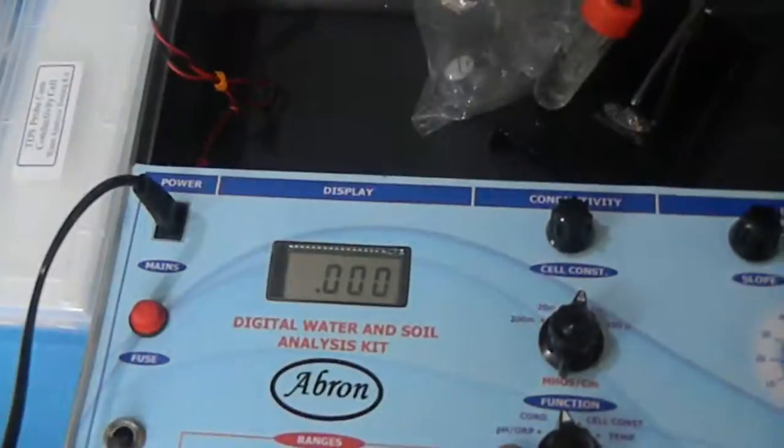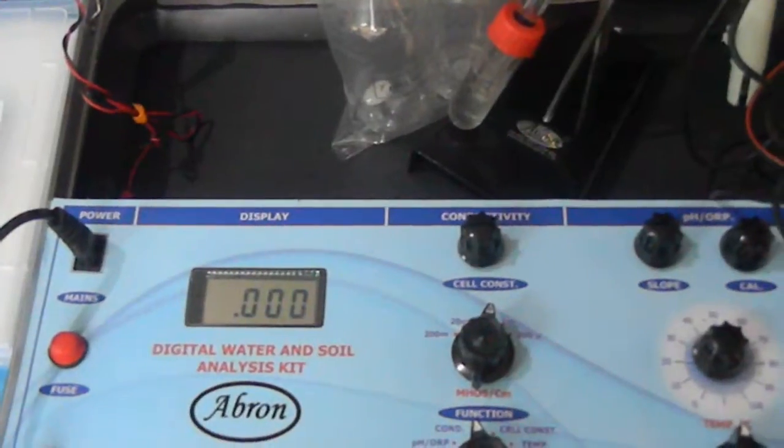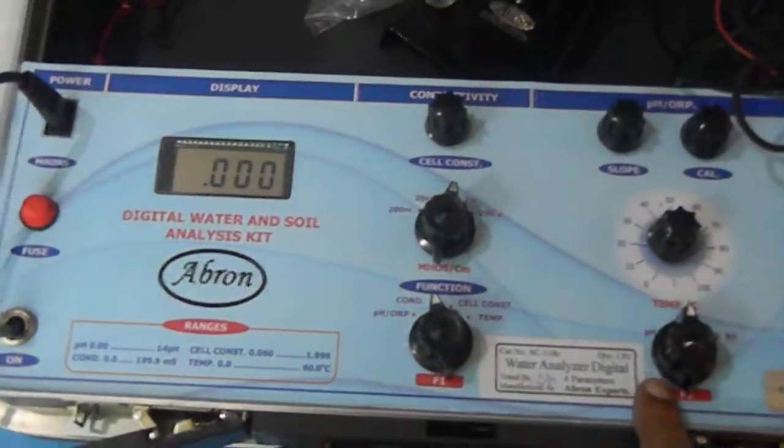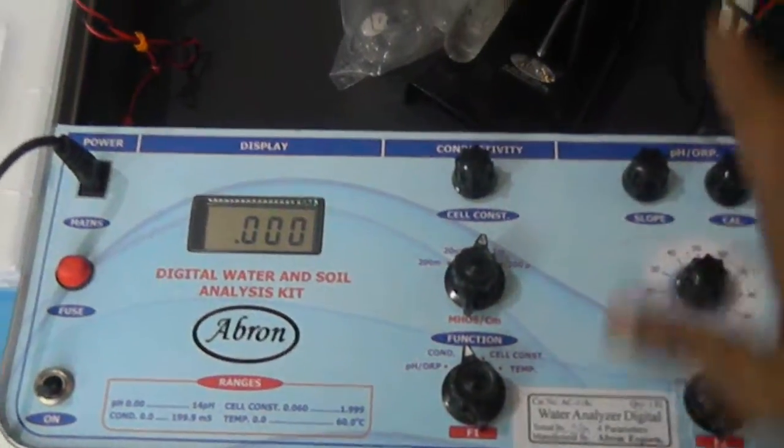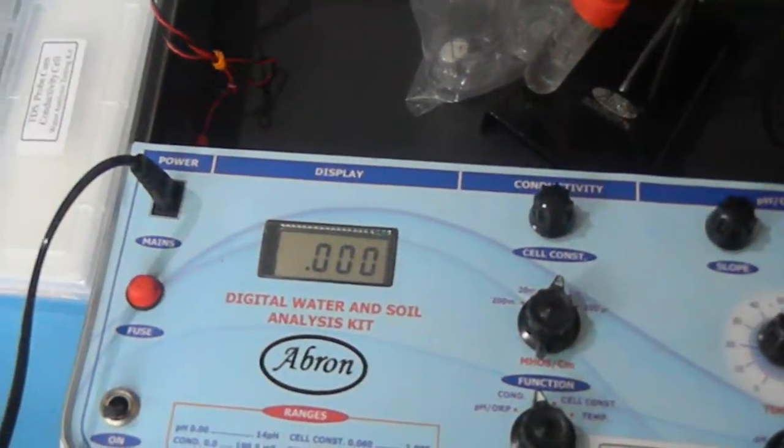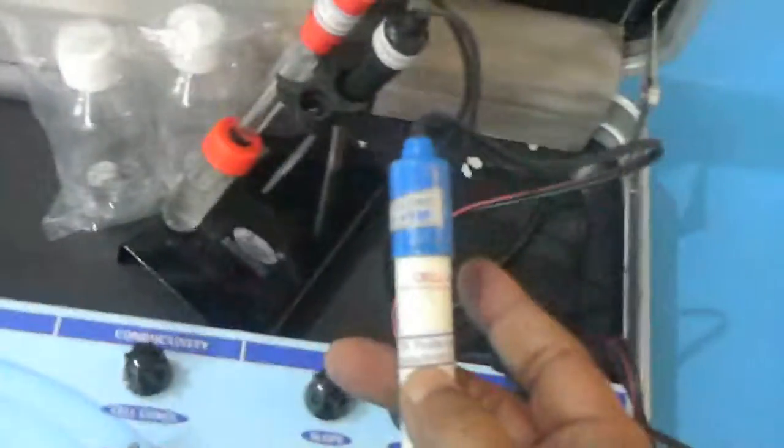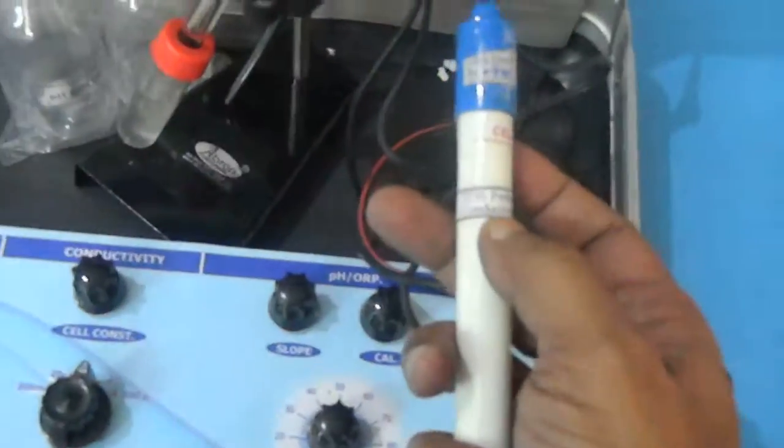This pH and MV probe is the single one. It will give you pH and MV both models in the same probe. And temperature probe is there. Then this conductivity probe is TDS as well as conductivity. This is dual TDS as well as conductivity probe. You can do both these functions from here.